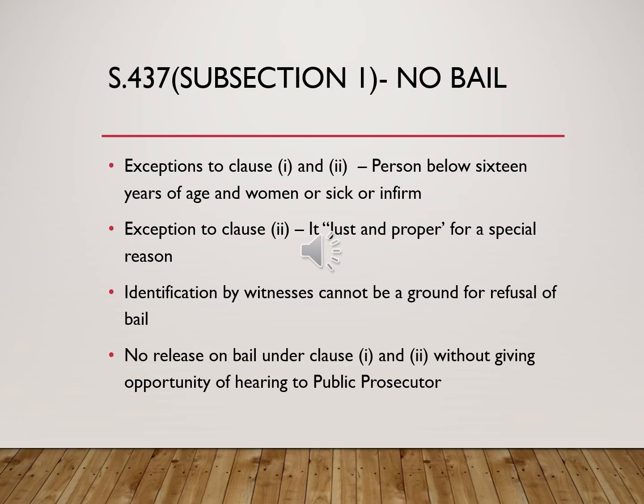Exceptions to refusal of bail under Clause 1 and Clause 2 of Subsection 1 include a person below 16 years of age, a woman, or a sick person — in such cases the court can grant bail. Clause 1 deals with offences punishable with death or imprisonment for life. Clause 2 deals with offences on previous occasions punishable with death, imprisonment for life, or imprisonment for seven years, or two or more offences previously punishable with imprisonment from three to seven years. Another exception to Clause 2 is when the accused shows a just and proper reason. Identification of witnesses cannot be a ground for refusal of bail. No bail can be granted under Clause 1 and Clause 2 without giving an opportunity of hearing to the public prosecutor.